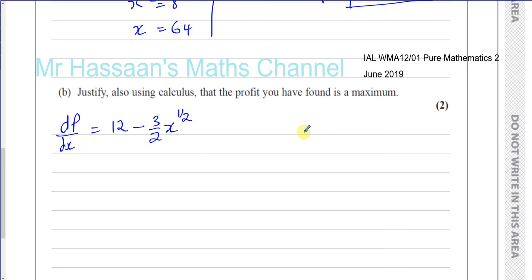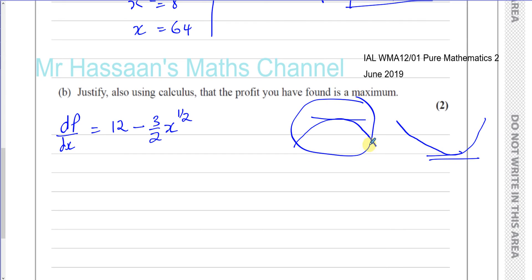When X equals 64, if it's a maximum, the curve will open downwards at that point. At a maximum, the gradient starts positive, becomes 0, and then becomes negative — so the rate of change of the gradient is negative. Therefore d²P/dx² must be negative for a maximum. For a minimum, the gradient starts negative, becomes 0, and becomes positive, so d²P/dx² would be greater than 0. We need to show that at X equals 64, the second differential is negative.